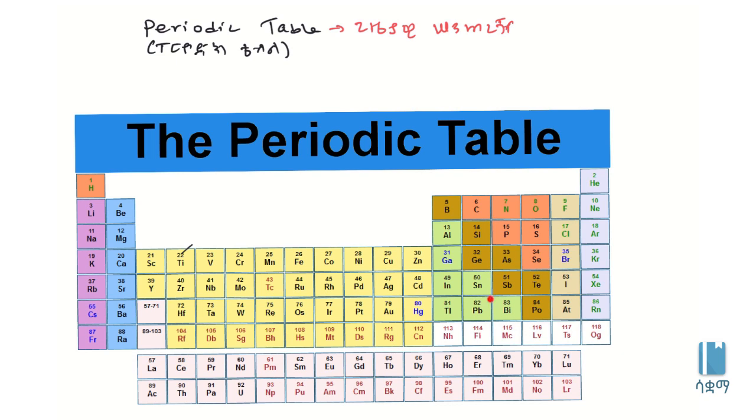Now let's look at metalloids like boron and silicon, and arsenic. These elements have properties between metals and non-metals.